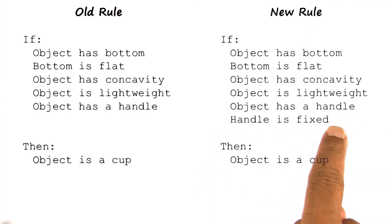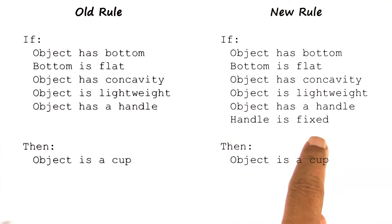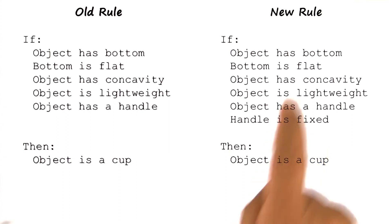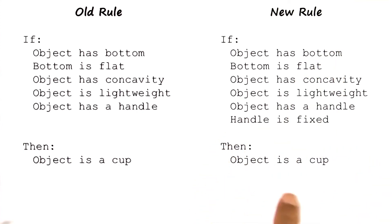This requires an explanation. Why is it that a handle being fixed is an important part of the definition of a cup? This is one of the key differences between knowledge-based AI and other schools of AI. Classification is ubiquitous in many schools of AI, as we have discussed earlier. Explanation, however, is a key characteristic of knowledge-based AI. Explanation leads to deeper learning — it not only says here are the features that result in a concept definition, it also says here is why these features are important for the concept definition.